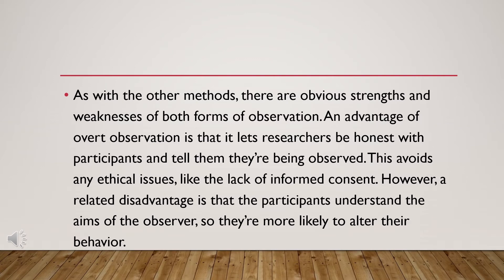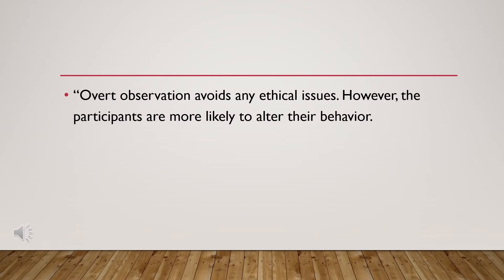There are obvious strengths and weaknesses of both forms of observation. An advantage of overt observation is that it lets researchers be honest with the participants and tell them they are being observed, avoiding ethical issues like the lack of informed consent. However, a related disadvantage is that participants understand the aims of the observer, so they are more likely to alter their behavior. When participants alter their behavior, it is called the Hawthorne effect — a type of reactivity in which individuals modify an aspect of their behavior in response to their awareness of being observed.